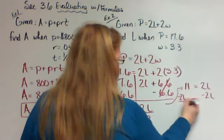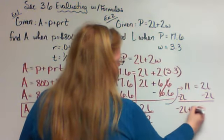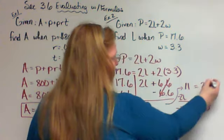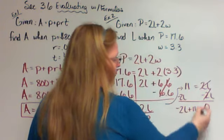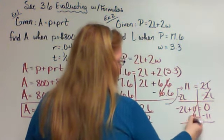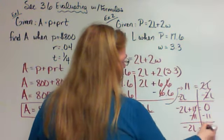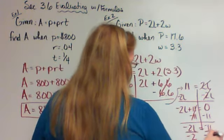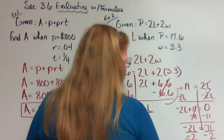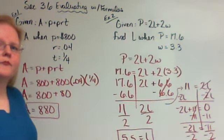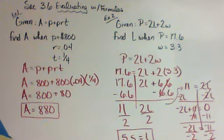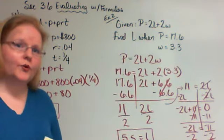I could have gone from 11 equals 2L and moved 2L to the other side. That would have given me negative 2L plus 11 equals 0. Move the negative 11 over, so I get negative 2L equals negative 11, and divide both sides by negative 2. You still end up with L equals 5.5.